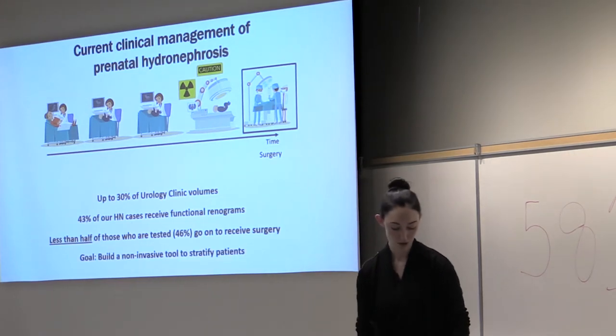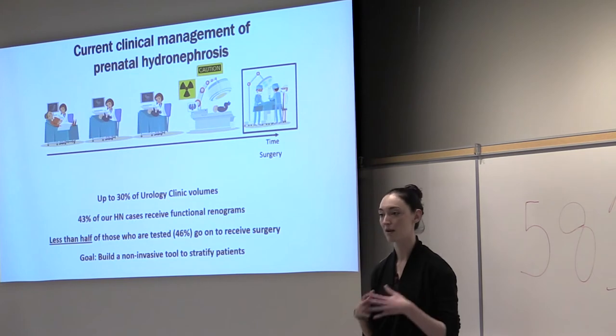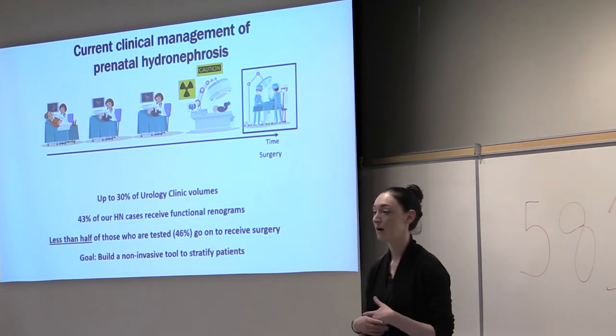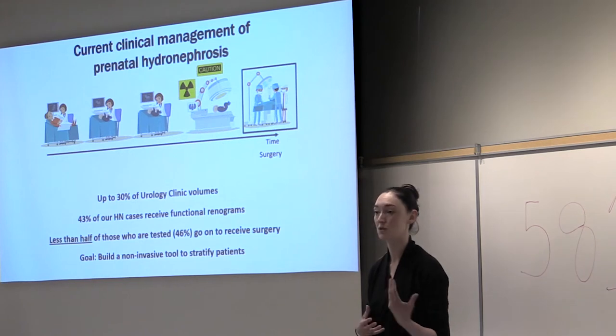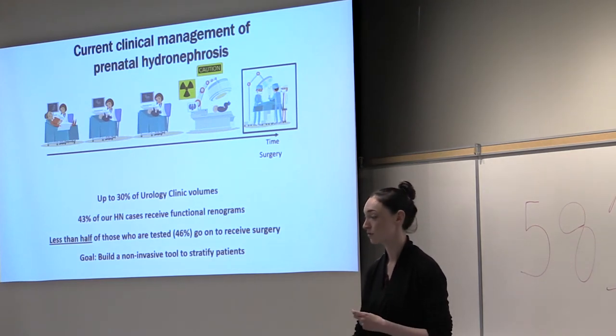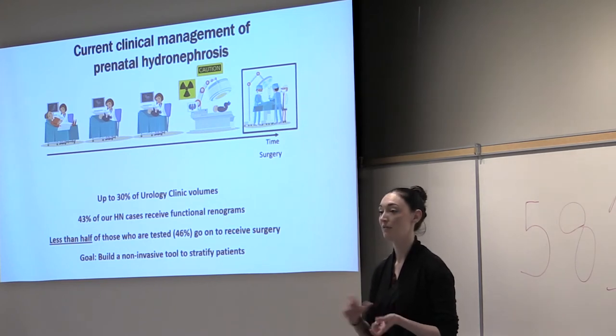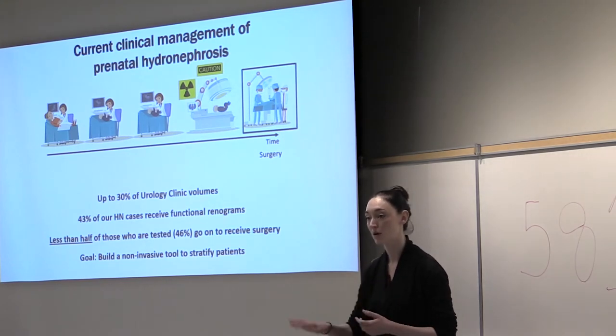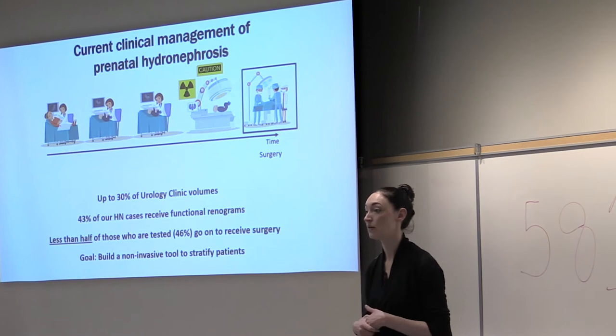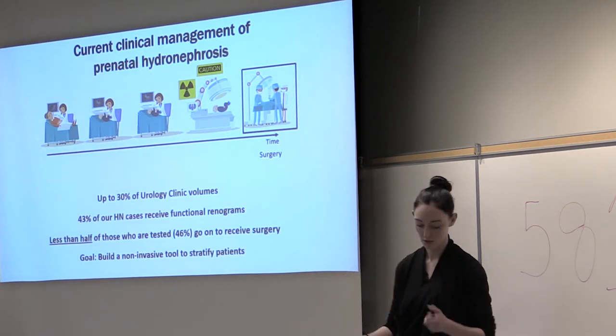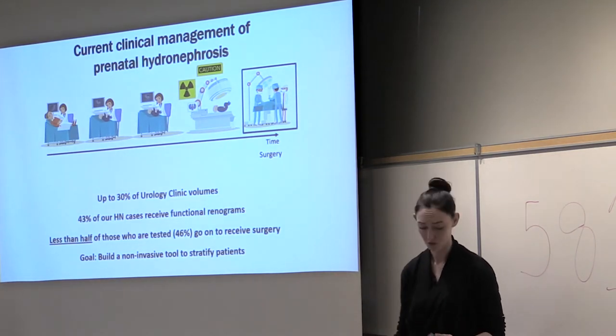So what we wanted to do was build a non-invasive tool to stratify patients more efficiently. We want to cut down on ultrasounds. Kids are getting between 2 and 10 before surgery or to determine surgery, and also to cut down the need for invasive tests, particularly in the lower acuity kids, where you might save them exposure to radiation or catheterization when they're below the age of 2.